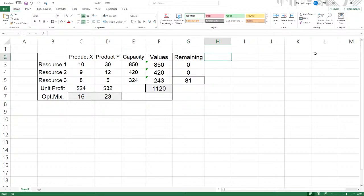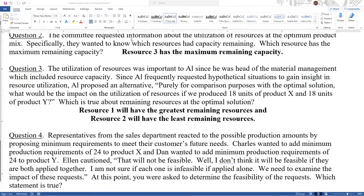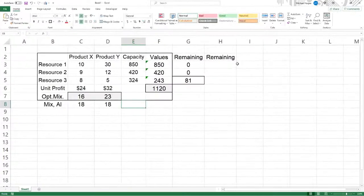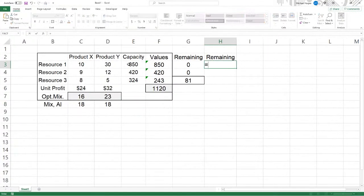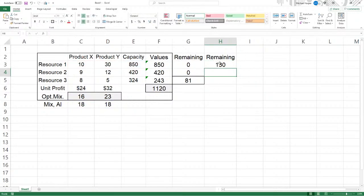Again, what's going to be remaining. Let's format this again. But now we want the mix of Al. And he said 18 units and 18. What if you take 18 on each one of these? 18 on x and 18 on y. Then what's going to be remaining? Well, that's going to equal your capacity minus the actual values, which is the sum product of the coefficients times the mix, which is 18 and 18, Al's Mix. F4 to freeze. And there's remaining capacity.